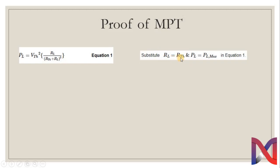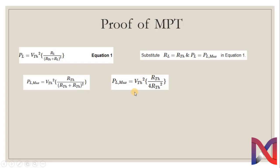We can substitute R_L = R_Thevenin and P_L = P_L_max in equation 1. So we get P_L_max = V_Thevenin² × R_Thevenin divided by (R_Thevenin + R_Thevenin)². In the denominator we have 2×R_Thevenin, and taking its square we get 4×R_Thevenin².